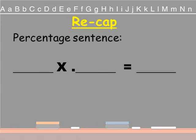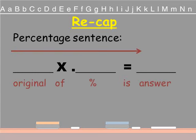Let's recap. This is our percentage sentence structure. We read it from left to right. The first blank is the original, the principal amount. Of means multiplication. The percent becomes a decimal number for computation to do the arithmetic. Is means the equal sign, and the answer is the product of the question.